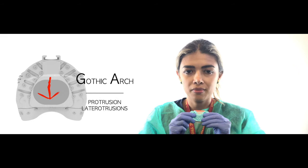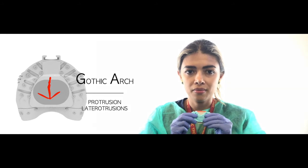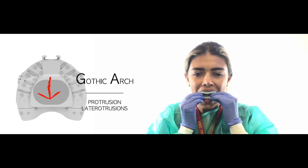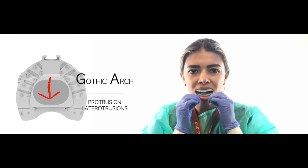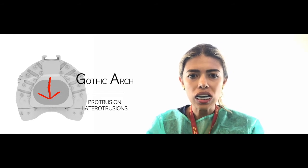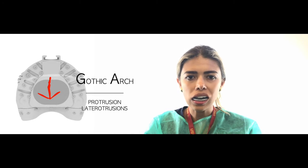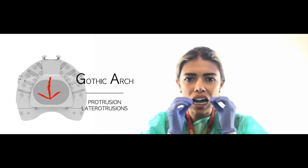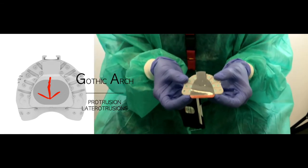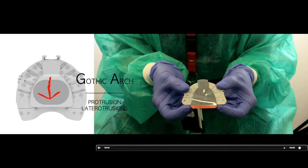Protrusion and lateral excursions complete the gothic arch tracing. First, place the maxillary plate device and mandibular device, have the patient relax and gently touch, then move protrusion forward and backward, then right side, backward, and the other side. On the maxillary plate, you can now see three lines showing — this is the gothic arch tracing, one of the graphic recording methods.